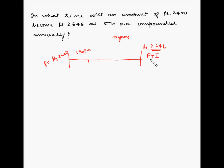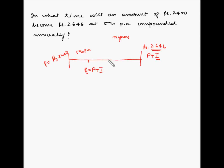The interest is being compounded annually. What that means is that at the end of the first year, the principal P1 is equal to the principal at the beginning of the year P, plus the interest gained during the first year. For the next year, P2 will be equal to P1 plus the interest for the second year.